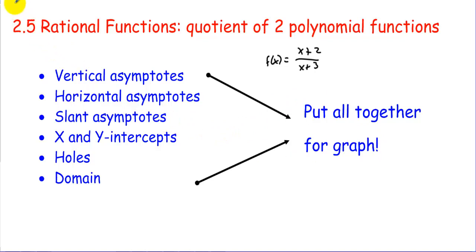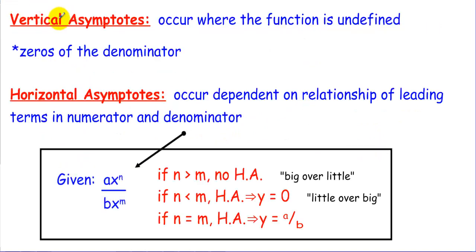Vertical asymptotes occur where the function is undefined — in other words, the zeros of the denominator.